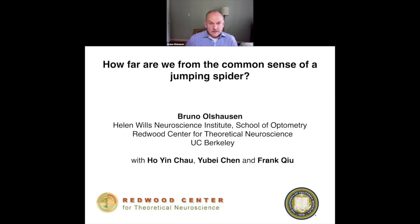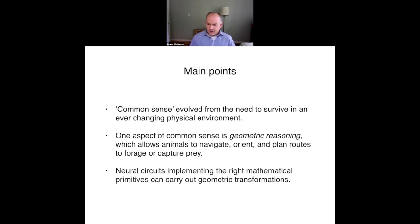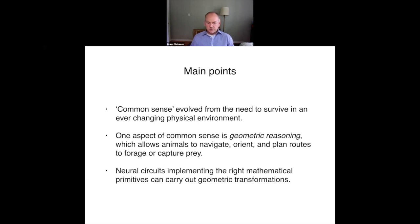The main points I'd like to make are that a lot of what we call common sense really derives from our ancestors — not just mammalian ancestors but many other animals in the animal kingdom — and their need to survive in a changing physical environment. The real world always throws new situations at you, so simple rules aren't sufficient. You need general purpose reasoning and internal models of the world. One form of this is geometric reasoning, which allows animals to navigate, orient, and plan routes to forage or capture prey.